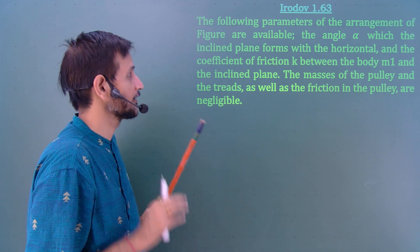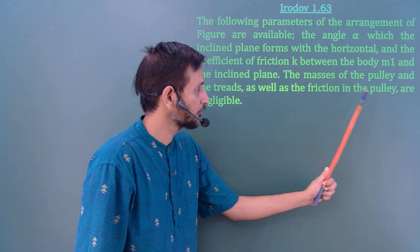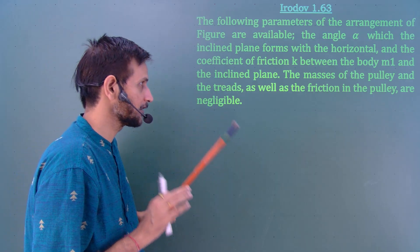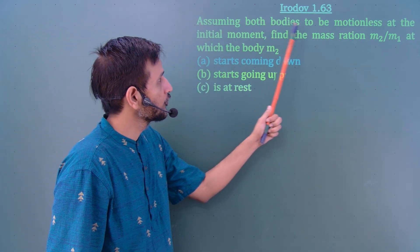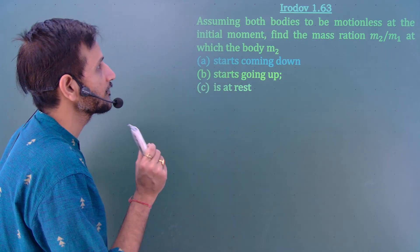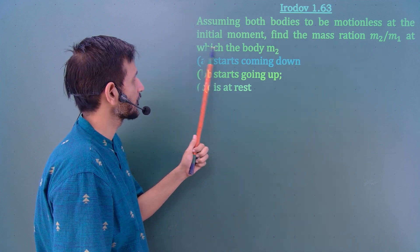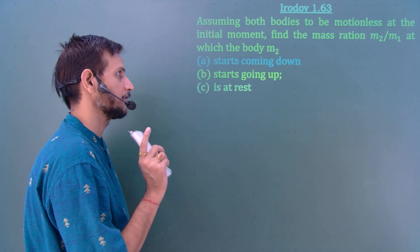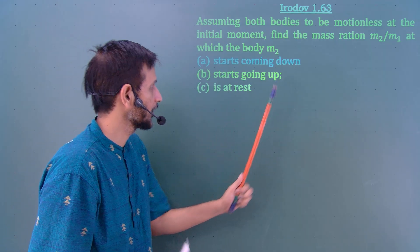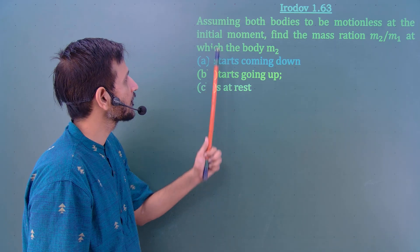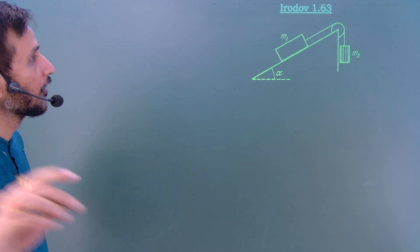In this question we have to consider that the masses of the pulley and threads, as well as friction in the pulley, are negligible — so the pulley is massless, the thread is massless, and the pulley is frictionless. Assuming both bodies are motionless at the initial moment, we must find the mass ratio m2/m1 at which: (1) body m2 starts coming down, (2) body m2 starts going up, and (3) the body is at rest.